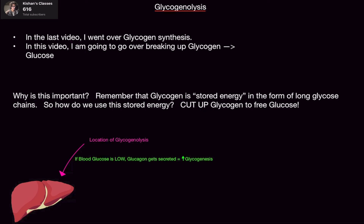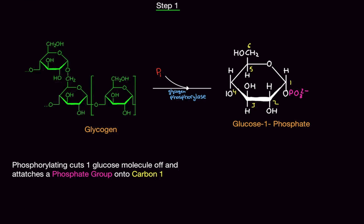It's like a bank — you have to withdraw the currency, which is glucose. Glycogenolysis happens primarily in the liver, though it can also happen in skeletal muscles. When blood glucose is low, glucagon — a hormone secreted from the alpha cells of the pancreas — travels to the liver and basically tells it to wake up and break up glycogen to make glucose. Low blood glucose is a bad thing; your cells need glucose to survive.